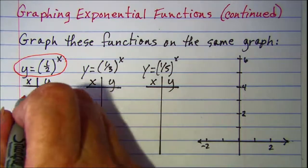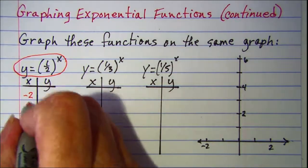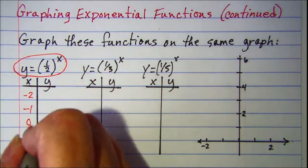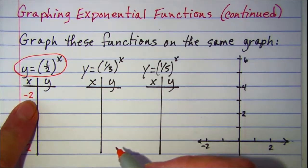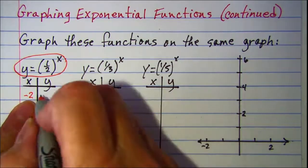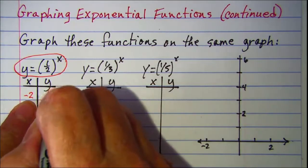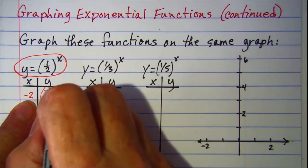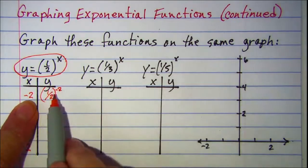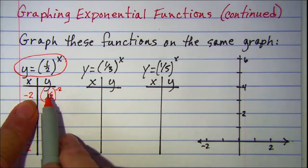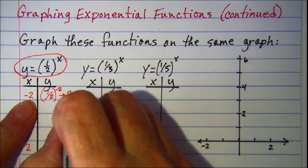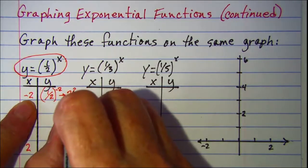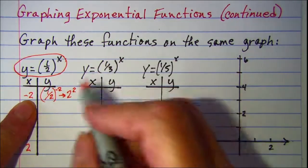I'm going to let x be negative 2, negative 1, 0, 1, and 2. When x is negative 2, we have one half raised to the negative 2 power. The negative on this exponent makes this become the reciprocal, so this is actually 2 raised to the second power, which is 4.